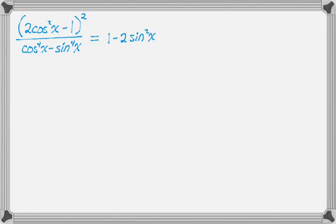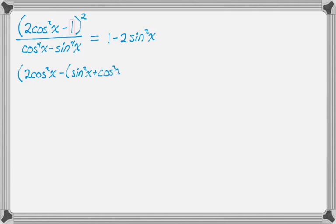I see a couple things that I can do. In the numerator here, I see 2 cosine squared and then minus 1. For that 1, what I'm going to do is replace it with sine squared plus cosine squared, because it'll effectively get rid of the 2. The way you get good at these is by just doing a lot of them, so I'm replacing 1 with sine squared plus cosine squared — that's a common thing to do as identities get more complicated.